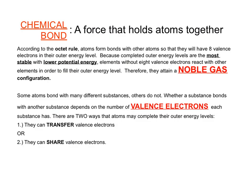Chemical bonding in general: a chemical bond is a force that holds atoms together. According to the octet rule, atoms form bonds with other atoms so that they have eight valence electrons in their outermost energy level. Because completed outermost energy levels are the most stable with the lowest potential energy, atoms without eight valence electrons are going to react with each other to fulfill that outer eight valence electrons.